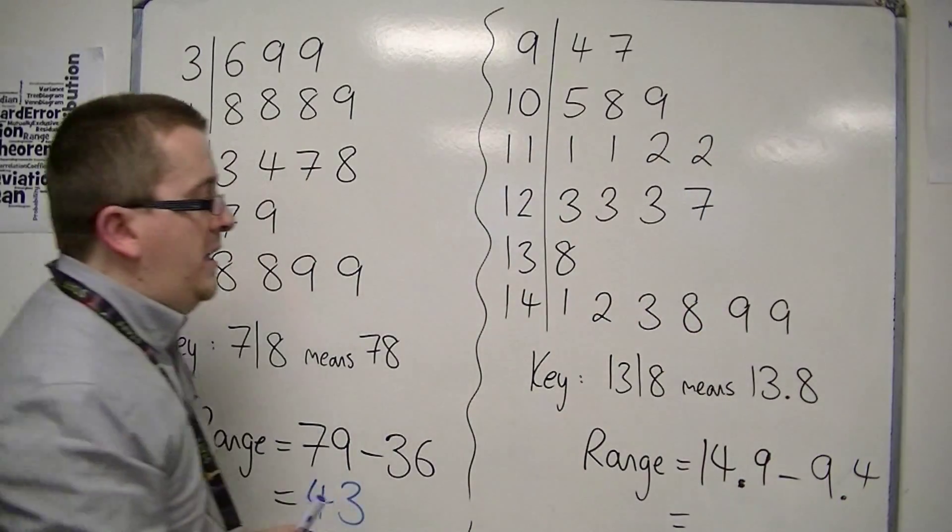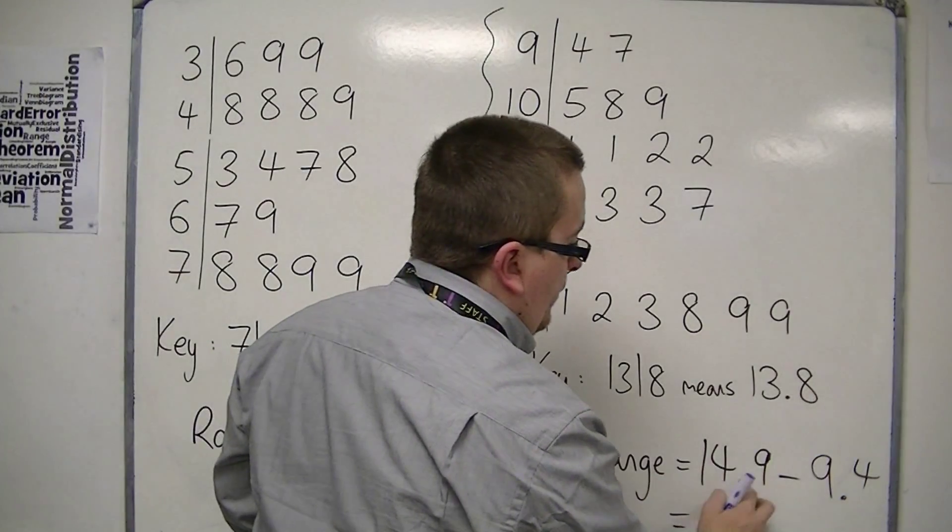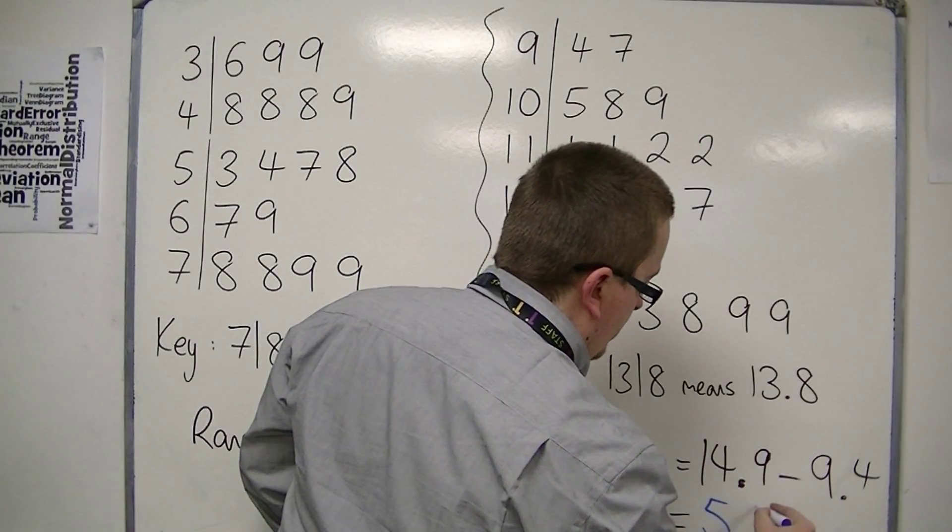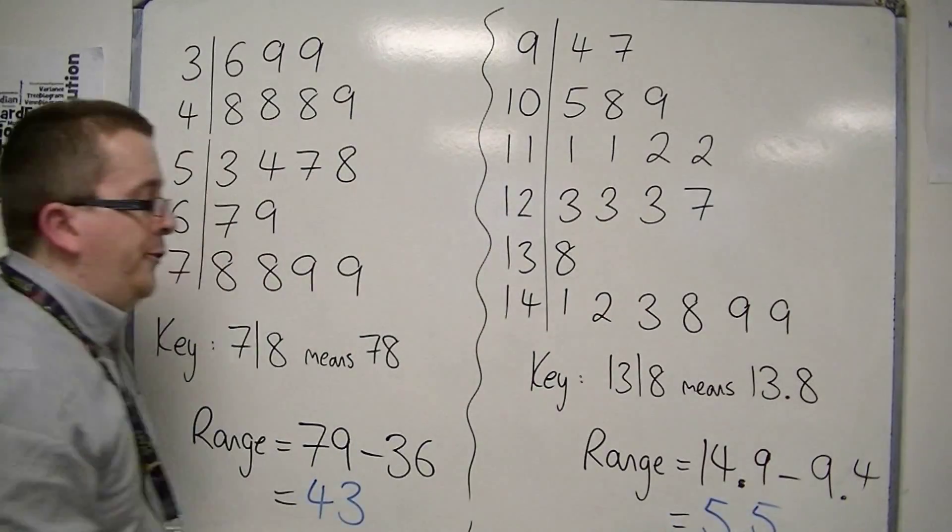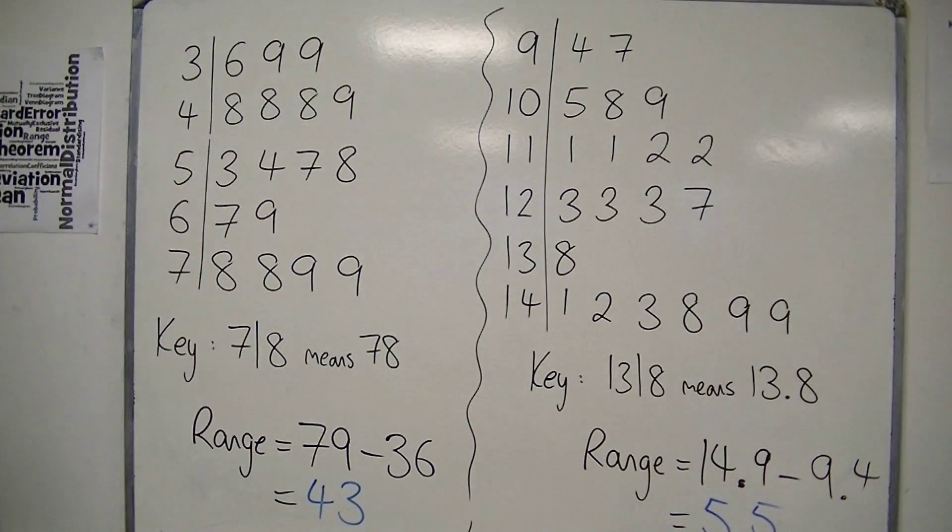So 14.9, take away 9.4, will get me 14.5, so 5.5. Almost said 6.5. So 5.5 is the range for this second example.